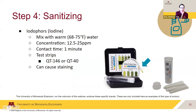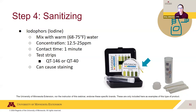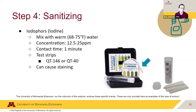Iodophors are iodine-based sanitizers, but they're not that commonly used unless the temperature of the solution can be carefully controlled. The water needs to be maintained in a tight window — at temperatures slightly over 100 degrees Fahrenheit, the chemical will start to vaporize, so it's most useful in low-temperature applications. The concentration range is between 12.5 to 25 ppm with one minute of contact time. A downside of iodine-based sanitizers is that they can cause staining on some surfaces.